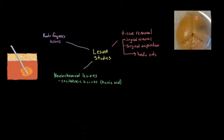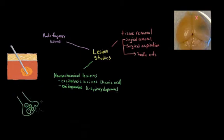Another type of neurochemical lesion is created by a chemical called oxydopamine, or 6-hydroxydopamine. And this is a really useful chemical that selectively destroys dopaminergic neurons, as well as noradrenergic neurons, or neurons that release dopamine and norepinephrine noradrenaline.